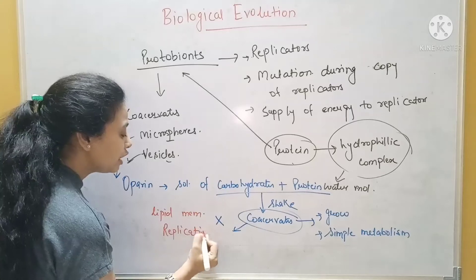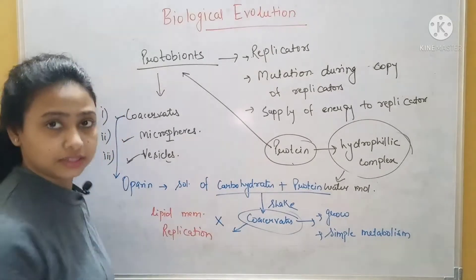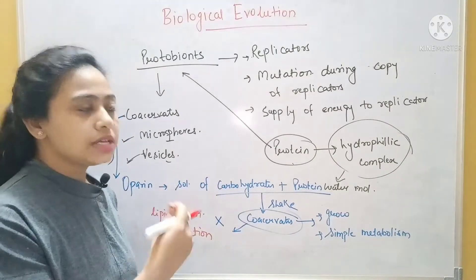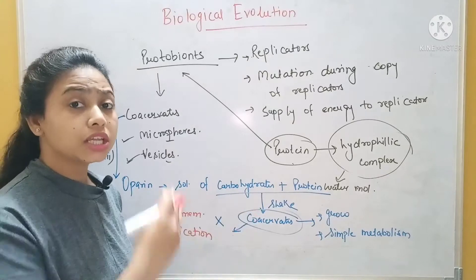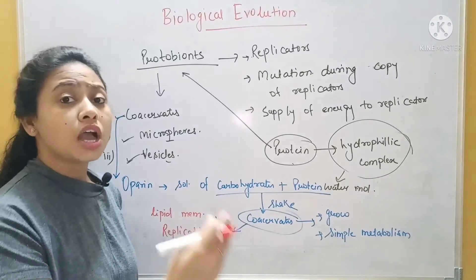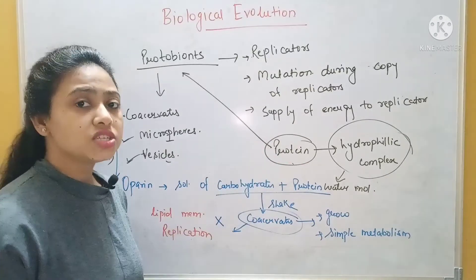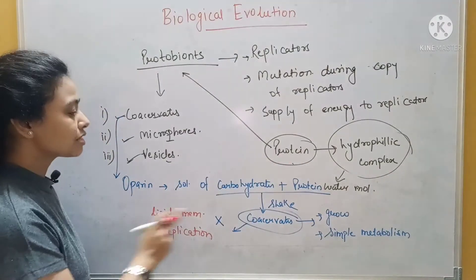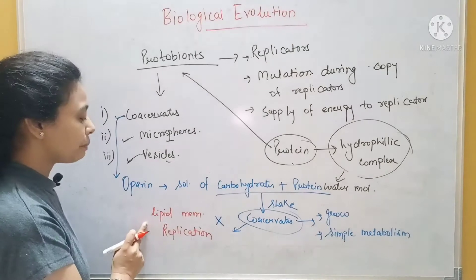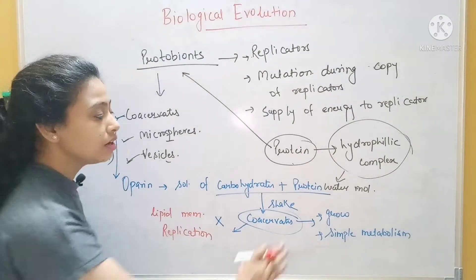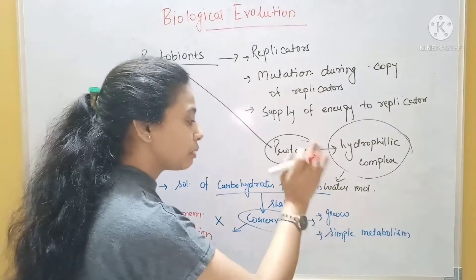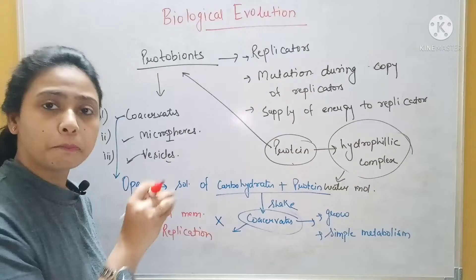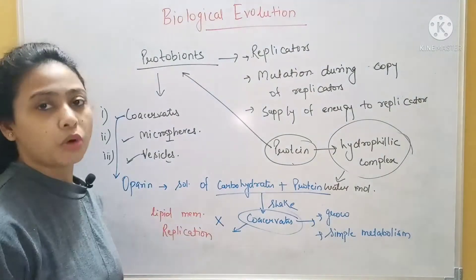But what was absent in Oparin's coacervates? They were not having a lipid membrane. We know that in today's cells there is a lipid membrane, but it was not in these. As well as they were not able to do replication. They were not able to divide either. Because it is primitive — complexity will grow slowly. So initially there was no lipid membrane, but they were able to grow and showing simple metabolism.